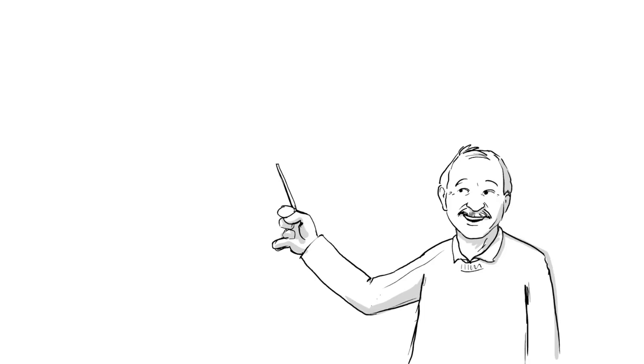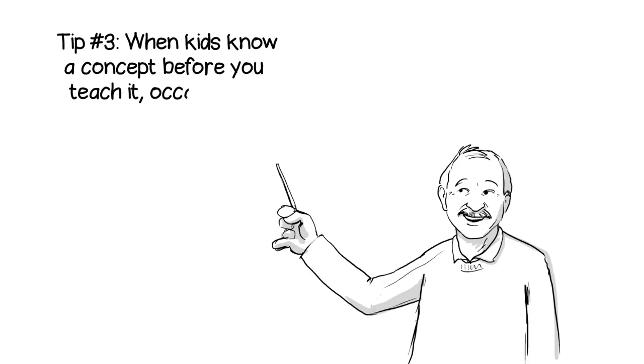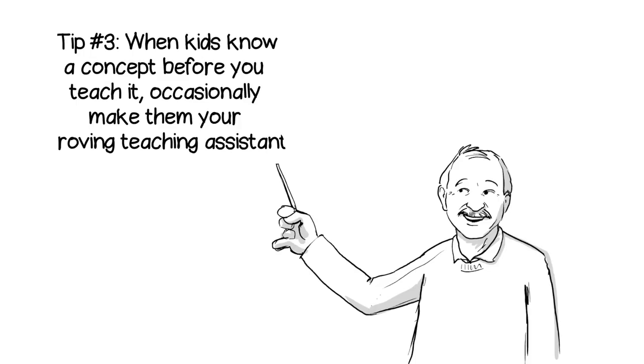Of course, that must only be done occasionally. Bright and gifted kids deserve to be learning material that's challenging for them, not just helping slower students. So, Tip 3: When kids know a concept before you teach it, occasionally make them your roving teaching assistant.